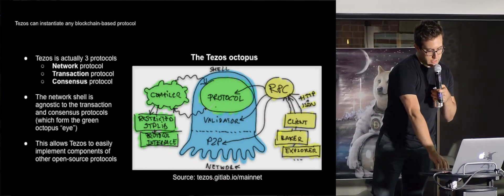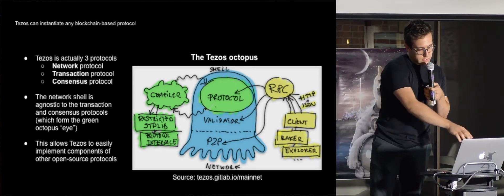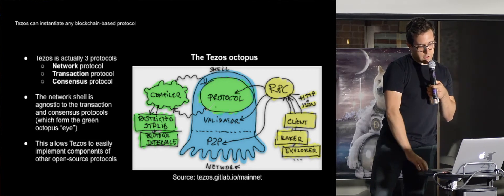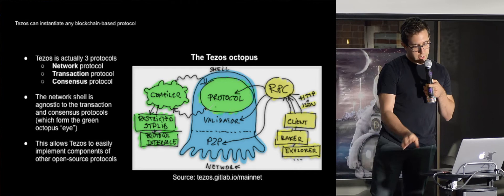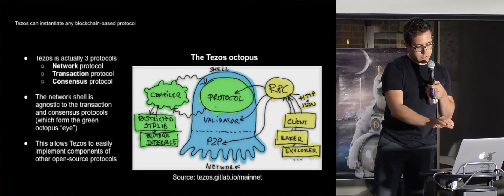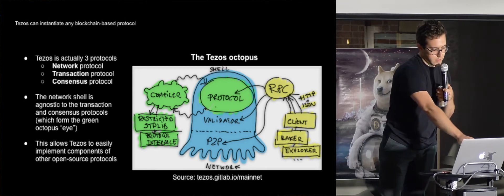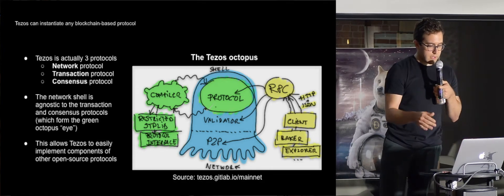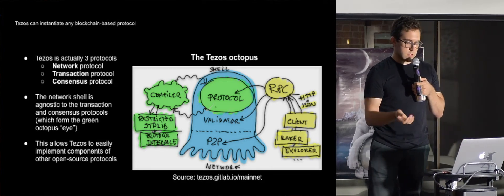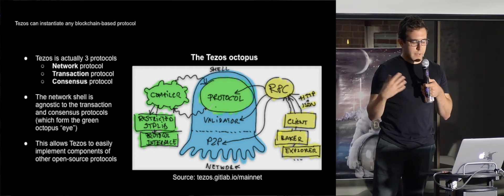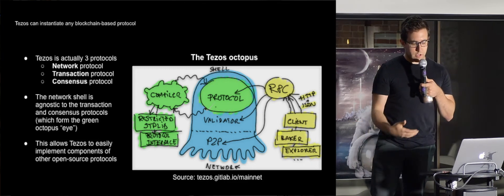What does that look like? It looks like an octopus. Tezos is actually three protocols. There's the network protocol, the transaction protocol, and the consensus protocol. The network shell — the octopus — doesn't care about what the transaction and consensus protocols are, which are basically the green eye in the middle. This architecture basically allows Tezos to easily implement changes to the transaction and consensus protocols based on how stakeholders coordinate around different proposals and upgrades.